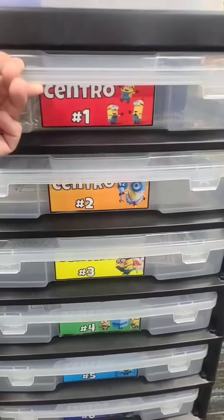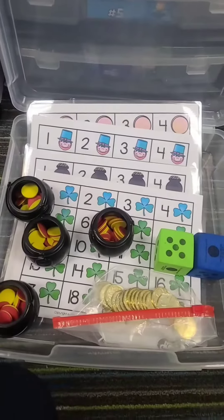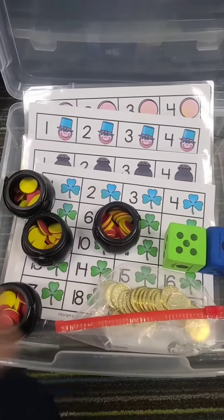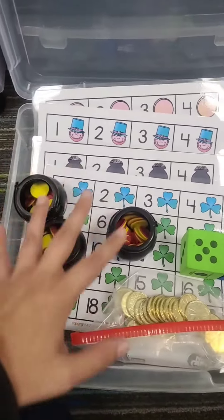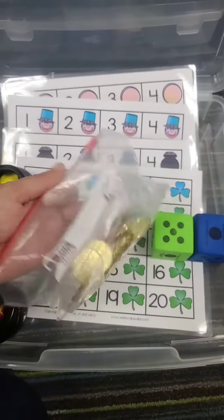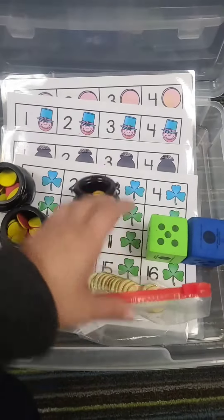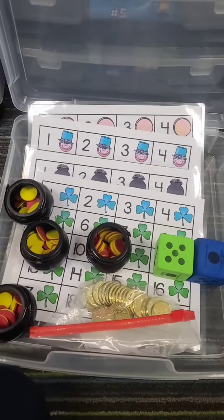These are the math centers for this week. Center number one: in this center, they're going to work in partners and they're going to have a race to 20. The first one that gets to 20 first will get a gold coin. And then they continue playing this to see who collects the most coins.